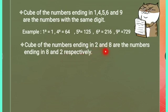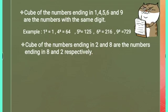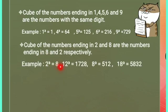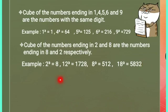The cubes of numbers ending in 2 and 8 end in 8 and 2 respectively — they swap. For example, 2³ = 8 (ends in 8), and 12³ = 1728 (ends in 8). Conversely, 8³ = 512 (ends in 2), and 18³ = 5832 (ends in 2). So numbers ending in 2 have cubes ending in 8, and numbers ending in 8 have cubes ending in 2.